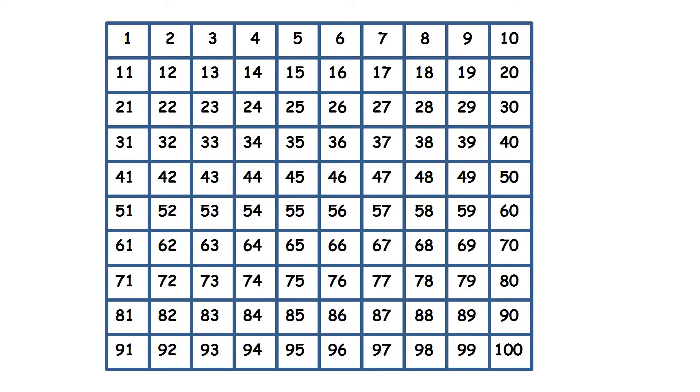So now we're going to keep on practicing counting up in steps of 2. So counting in our 2 times table. And this time we're going to count on 100 square. So count with me if you can. 2, 4, 6, 8, 10, 12, 14, 16, 18, 20.